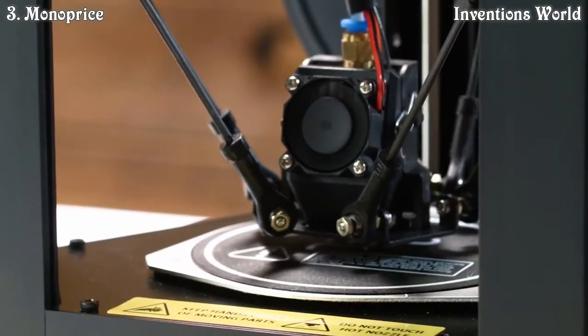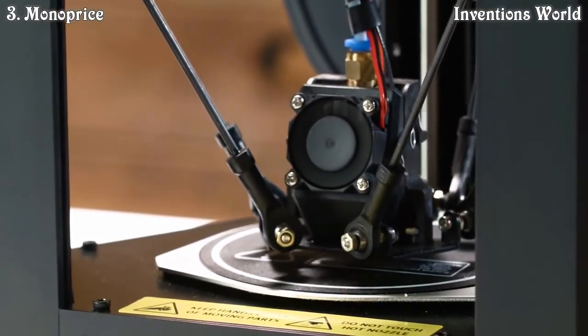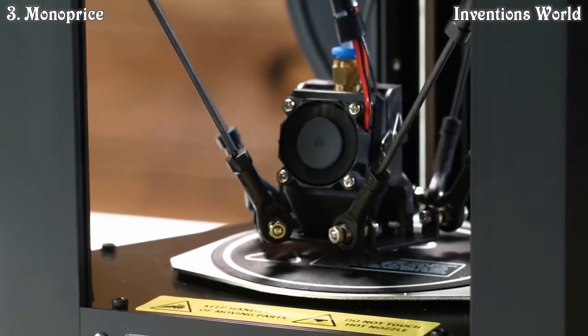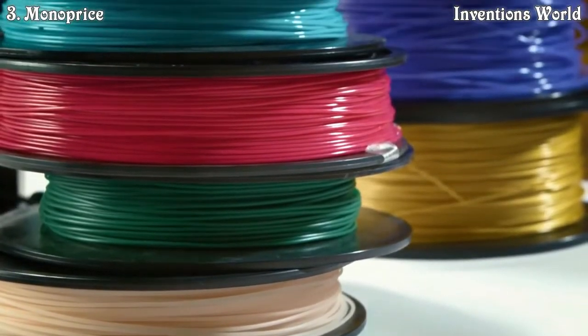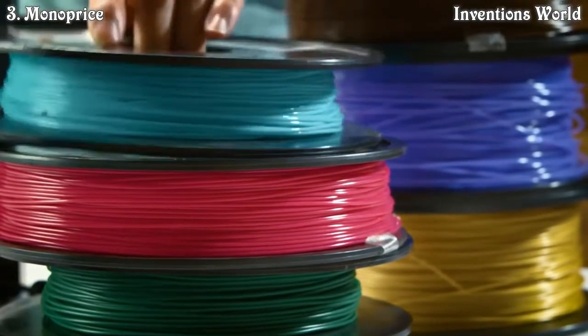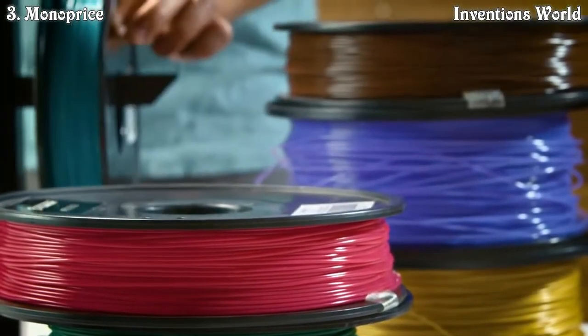The MP MiniDelta addresses all those with auto bed leveling for easy setup and printing. Our design uses an open filament, meaning you can use 1.75mm PLA or ABS filament from any brand.